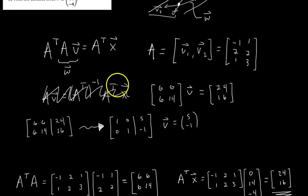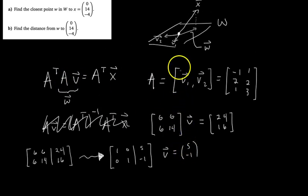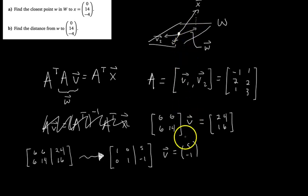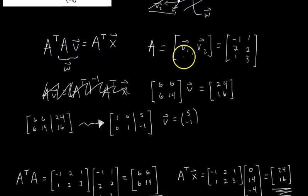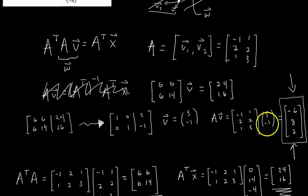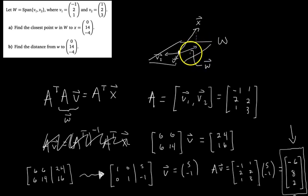This v is not our answer though. Our answer is A times v. Vector v is just the vector of weights of the linear combination of basis vectors for W that gets us to vector w. To get X projected onto W, we multiply A times v. After multiplying A times v, we get the vector negative 6, 8, 2. This is X projected onto subspace W, which by definition is the closest vector in W to vector X. That's our answer to Part A.